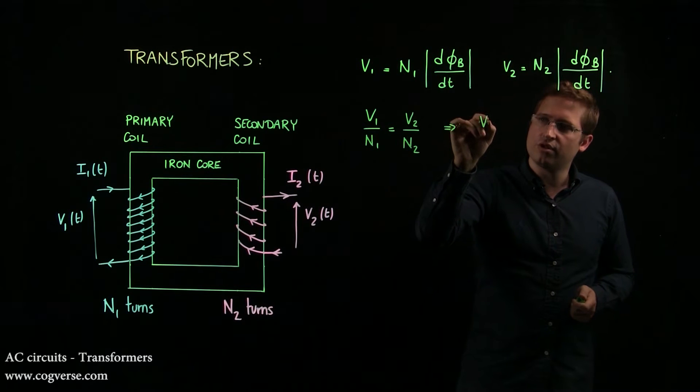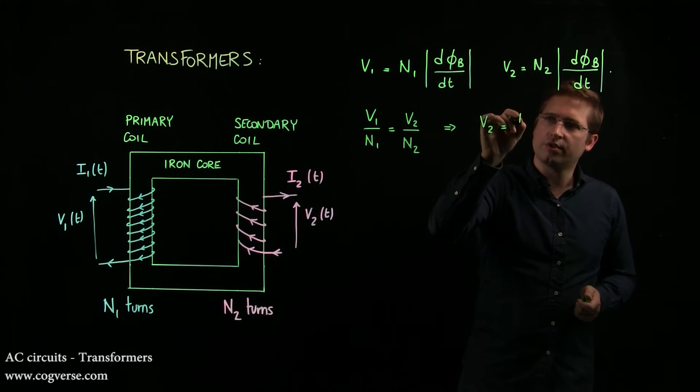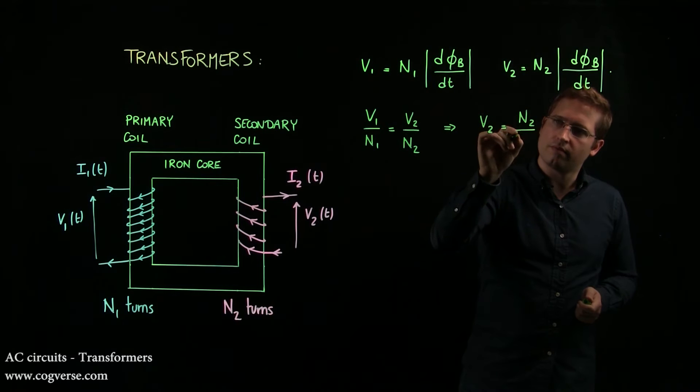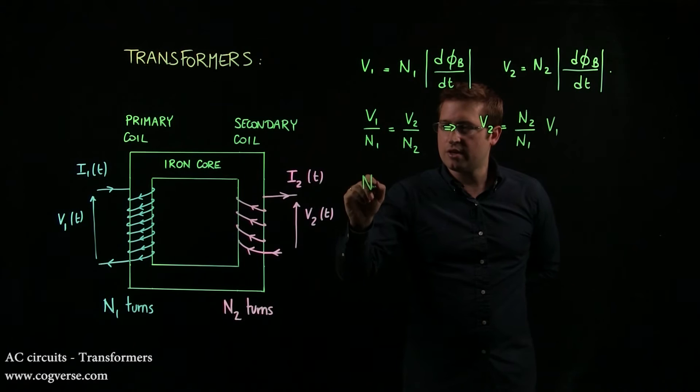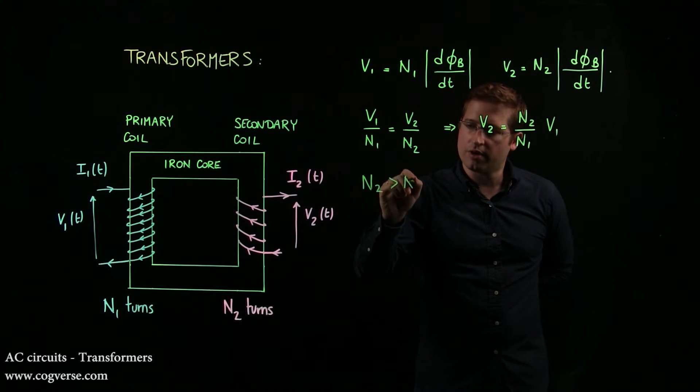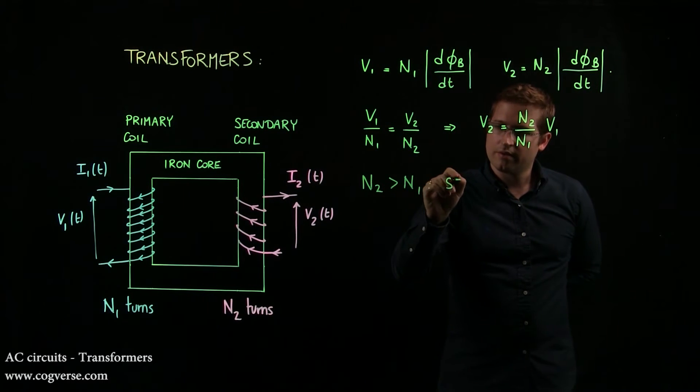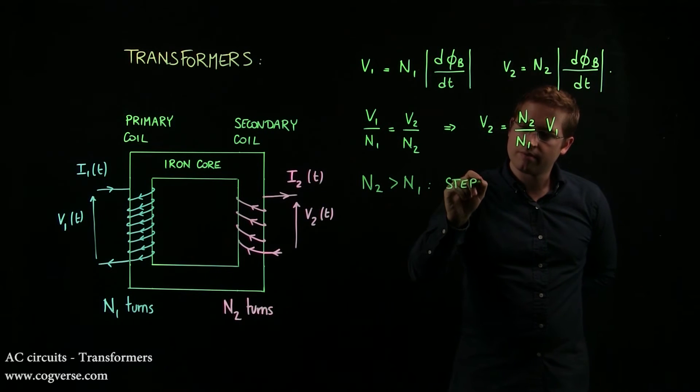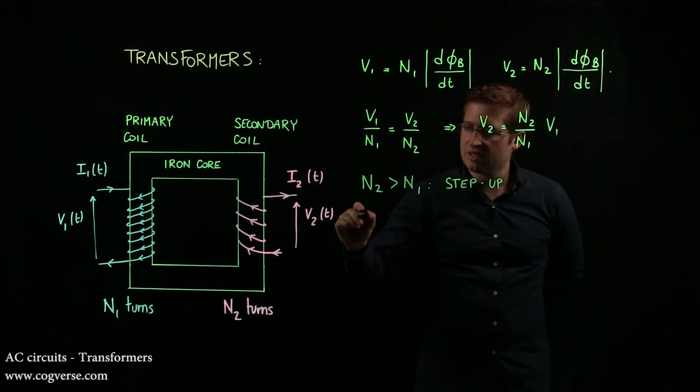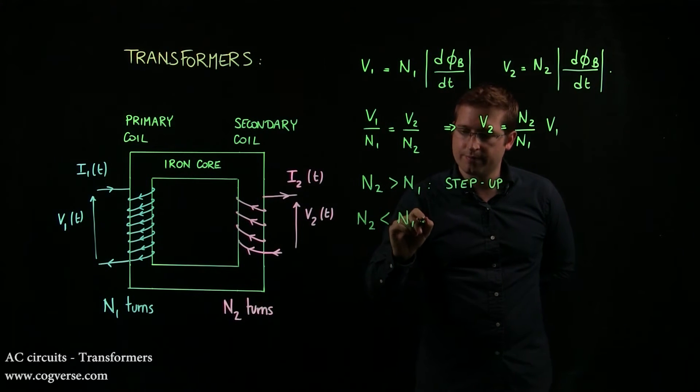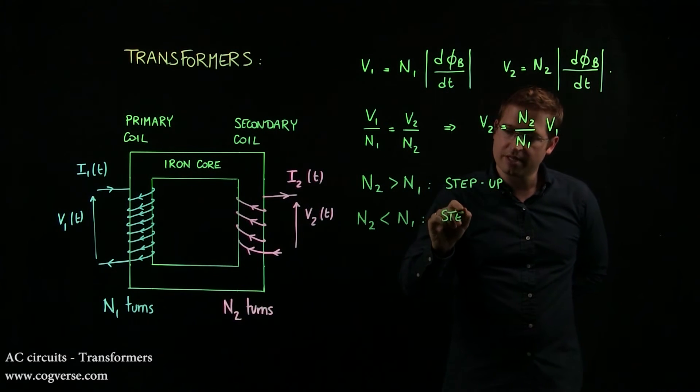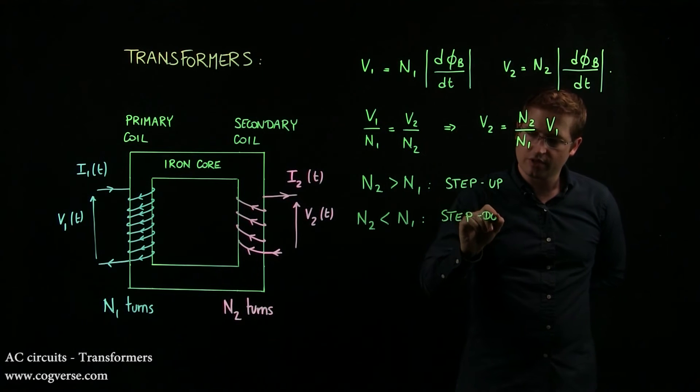Which means that V2 is equal to N2 over N1 times V1. And if N2 is greater than N1, then you have a step up transformer. If N2 is less than N1, then you have a step down transformer.